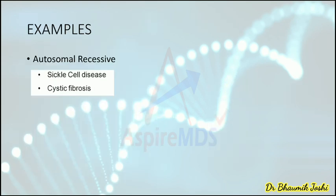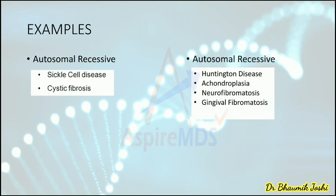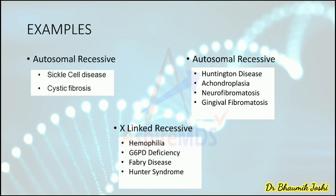Examples of these conditions: autosomal dominant — Huntington disease, achondroplasia, neurofibromatosis, and gingival fibromatosis. Autosomal recessive — sickle cell disease and cystic fibrosis. X-linked recessive — haemophilia, G6PD deficiency, Fabry disease, and Hunter syndrome. That's all from this video. If you have doubts, feel free to post in the comment section. All the best.